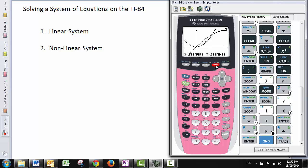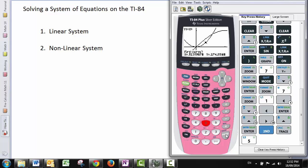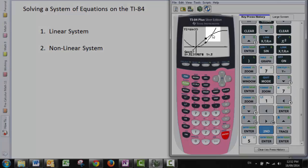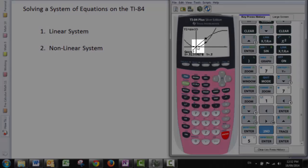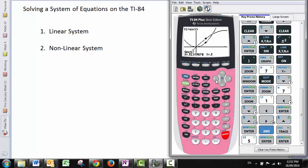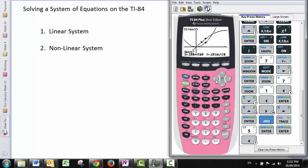Just like before, we go calculate, intersect, first curve, second curve is Y2. Guess is now important because the calculator needs to know, do I want this intersection point on the right or this one on the left? Let's go to the left. I like doing things in order. Enter. Enter. And not surprisingly, the intersection point is 0, 0.